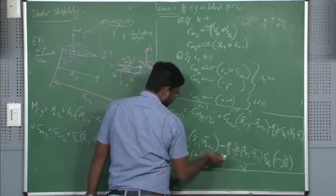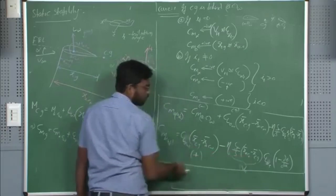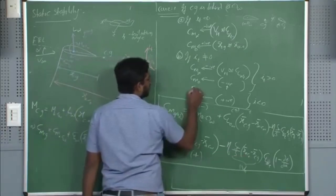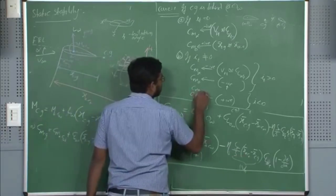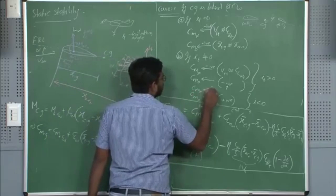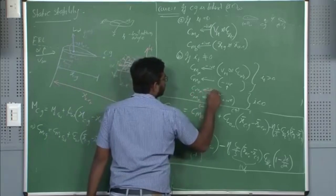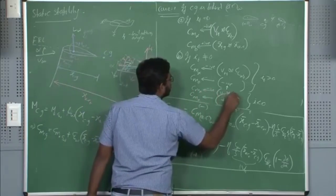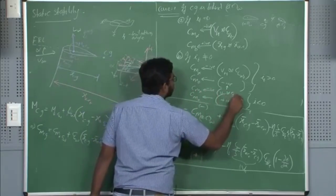As for CM_alpha, the tail setting angle i_t is not going to affect it. CM_alpha again depends upon the tail volume ratio and CL_alpha of the tail.